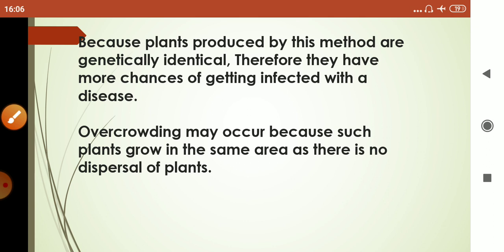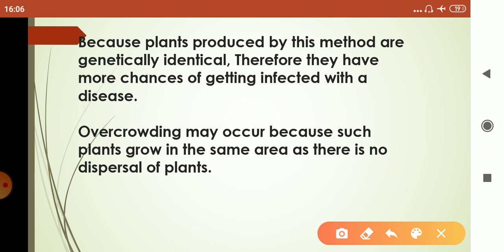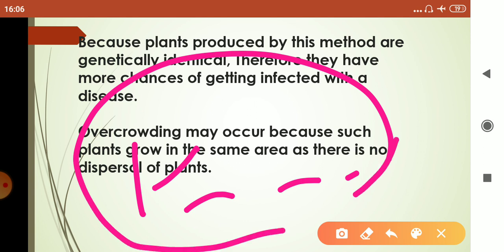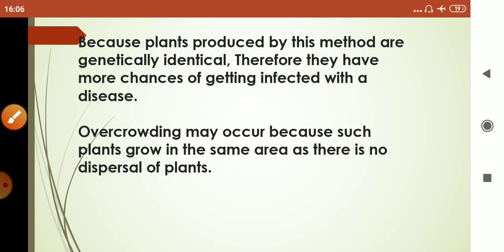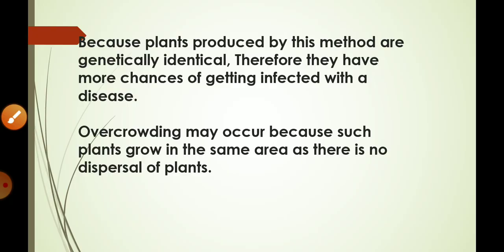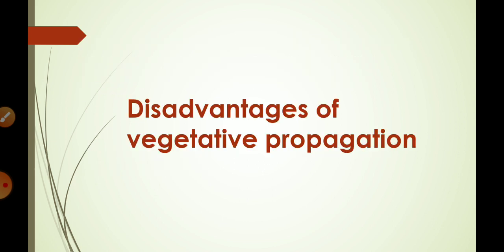The second disadvantage is that overcrowding may occur because plants grow in the same area — there is no dispersal of plants. In natural vegetative propagation, new plants grow in the vicinity of the parent plant, so overcrowding occurs. That covers the advantages and disadvantages of vegetative propagation and the economic importance of artificial propagation. Thank you.